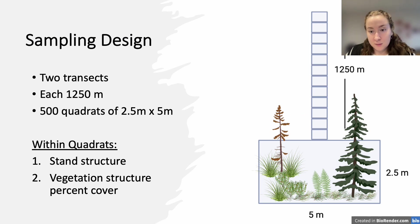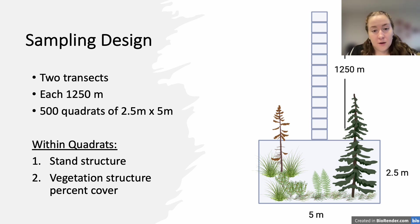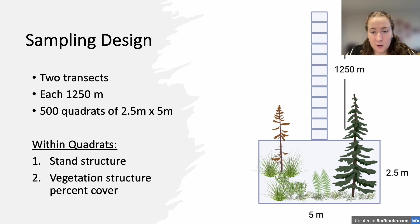For our sampling design, it is the same for both transects. Each transect is 1,250 meters or 1.25 kilometers in length, comprising 500 contiguous quadrats of 2.5 by 5 meters, as shown in the figure on the slide. Within each quadrat we sampled for stand structure by identifying each tree to species, measuring DBH, assigning a relative height category, and recording whether it was living or dead — all dead trees were then given a decay stage.